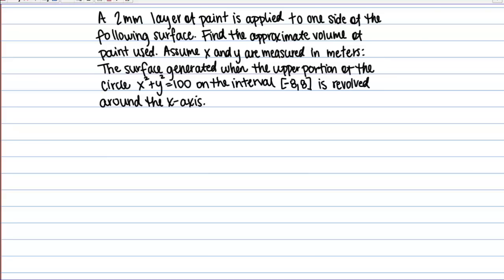Assume X and Y are measured in meters. The surface generated when the upper portion of the circle X squared plus Y squared equals 100 on the interval from negative 8 to 8 is revolved around the X axis.